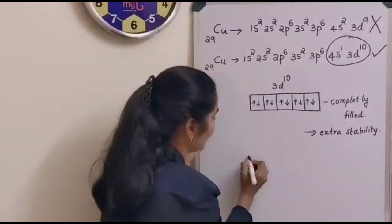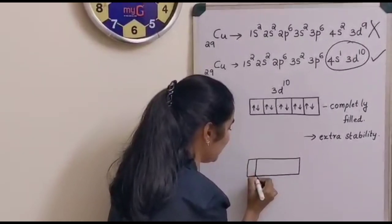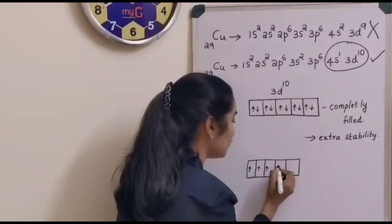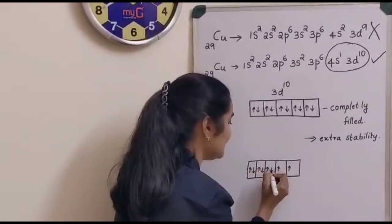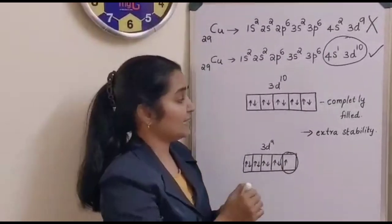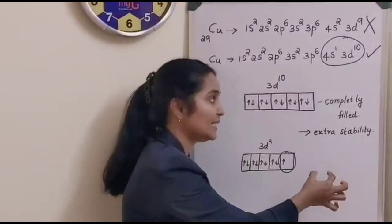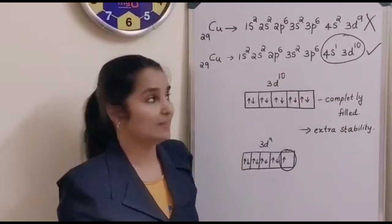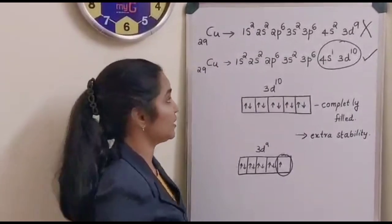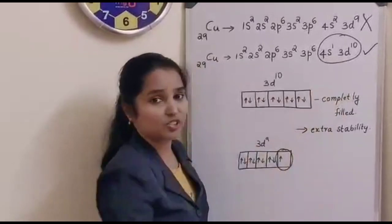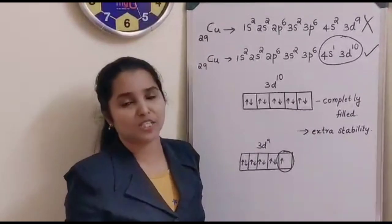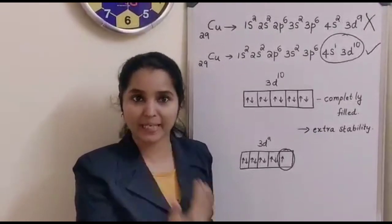But if it is 3d9, the orbital is not completely filled. So in order to attain the extra stability offered by the completely filled orbital, copper adopts an anomalous electronic configuration of 4s1 and 3d10 at its outermost shell and gains extra stability. That is why copper shows exceptional behavior — in order to attain the extra stability offered by the completely filled orbital.